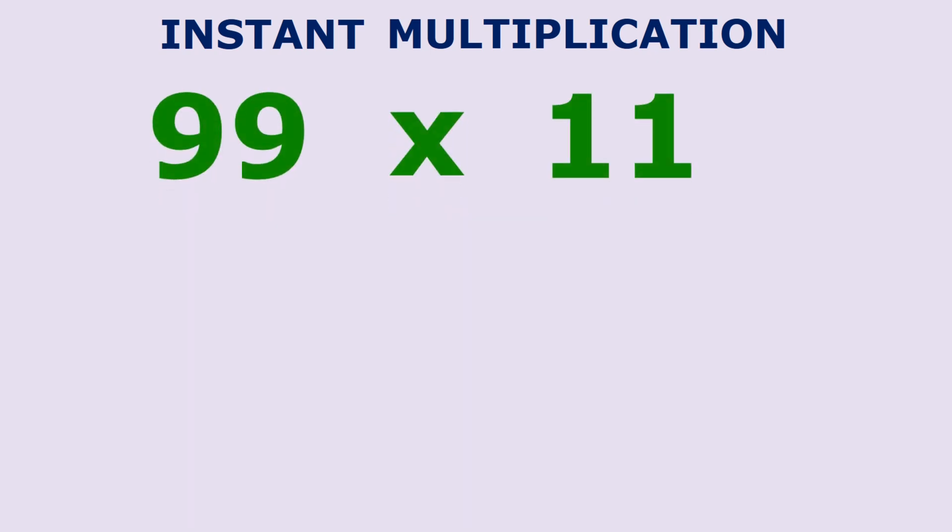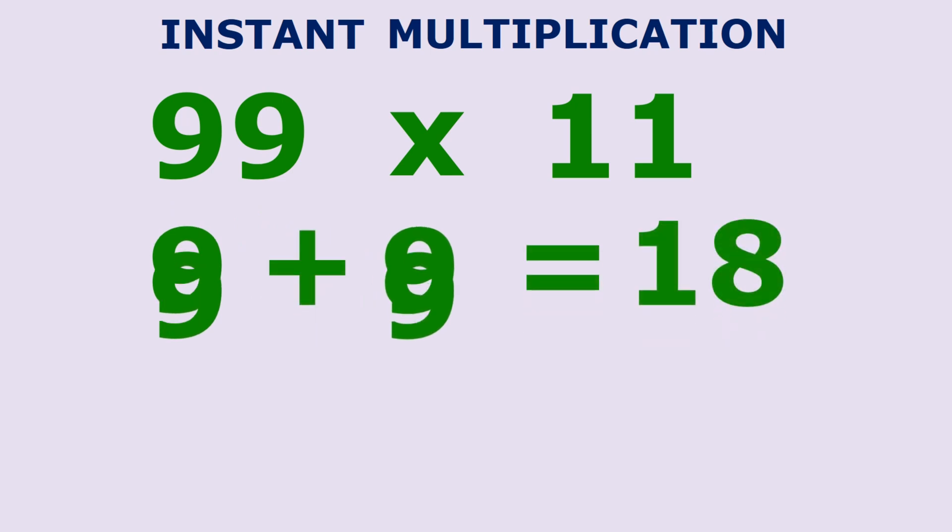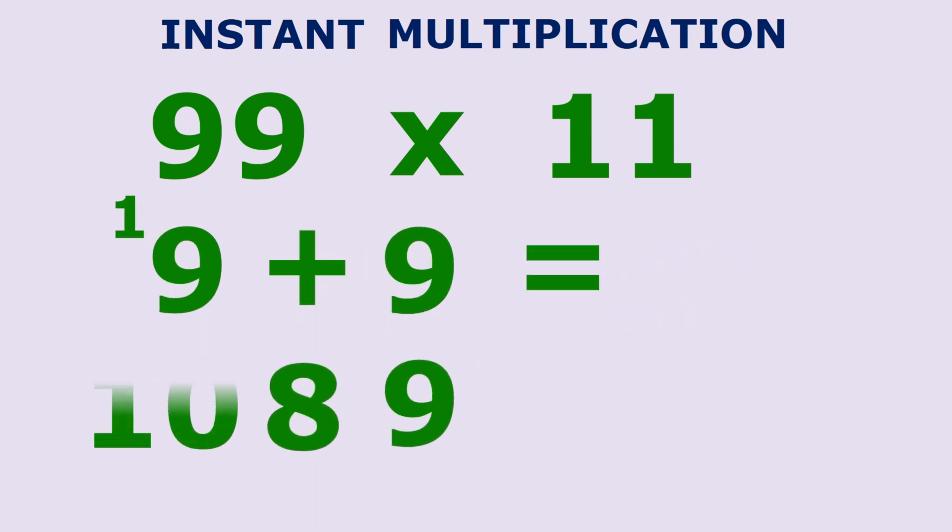Now let's see, what is 99 x 11? So we are ready for it. Since 9 plus 9 is equal to 18, the answer is 1089. Ok, take a moment to practice your new skills a few times then start showing off.